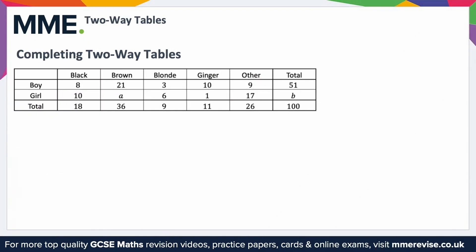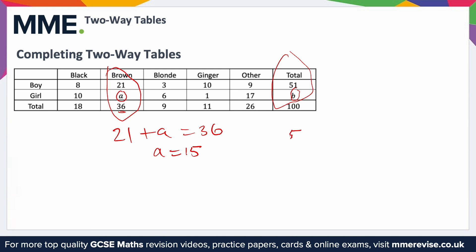You may be expected to complete incomplete two-way tables. You can see that A is missing here and B is missing there. The easiest way is to base it off the other values in the table. To figure out A, we look at this column — the column total is thirty-six and the only other entry is twenty-one, so twenty-one plus A equals thirty-six. That means A must be fifteen.